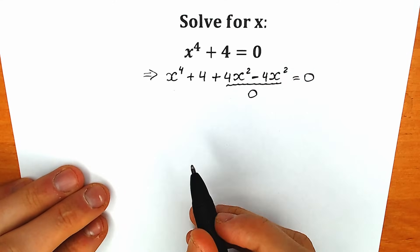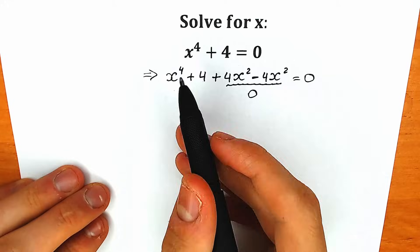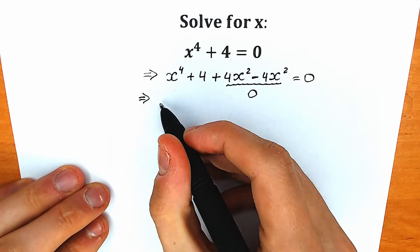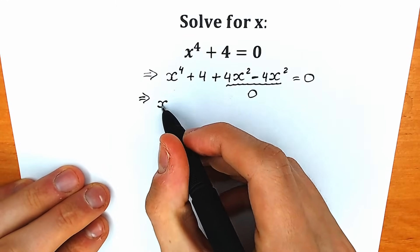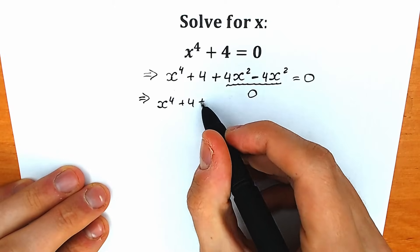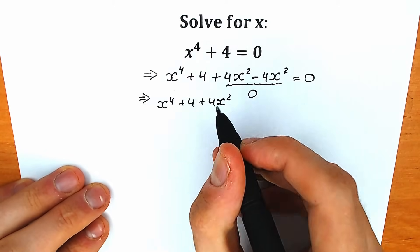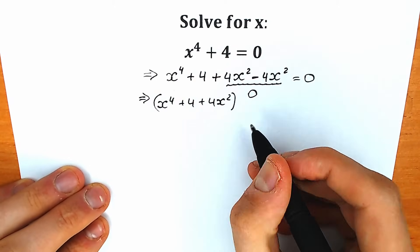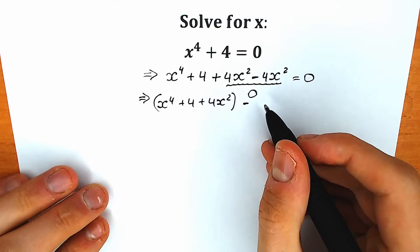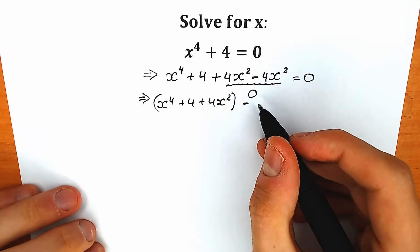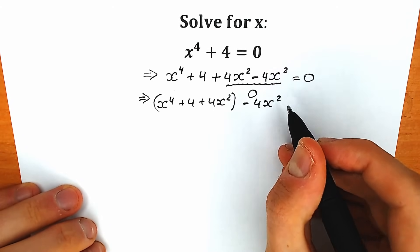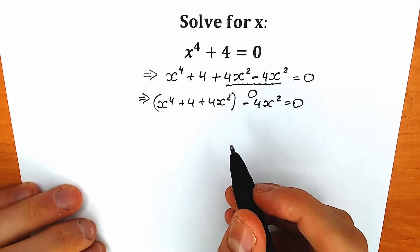But now I want to group this expression. I'm going to group x to the fourth power, plus 4, and plus 4x squared inside parentheses, and keep minus 4x squared equal to zero.